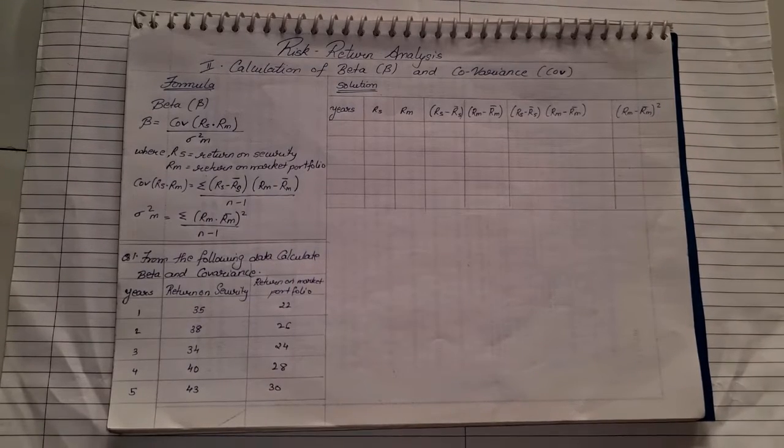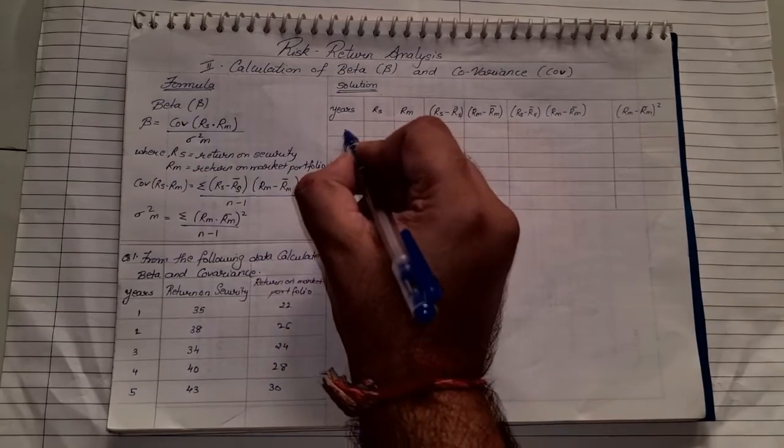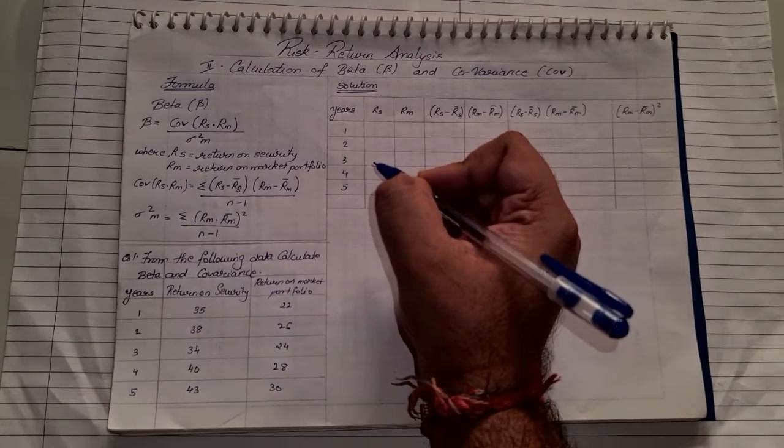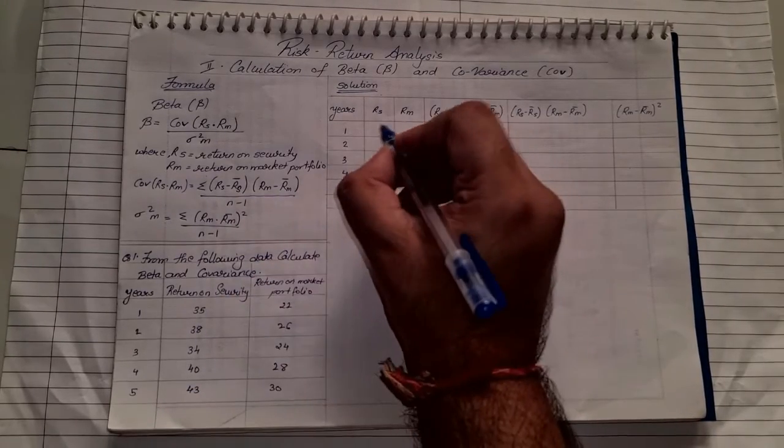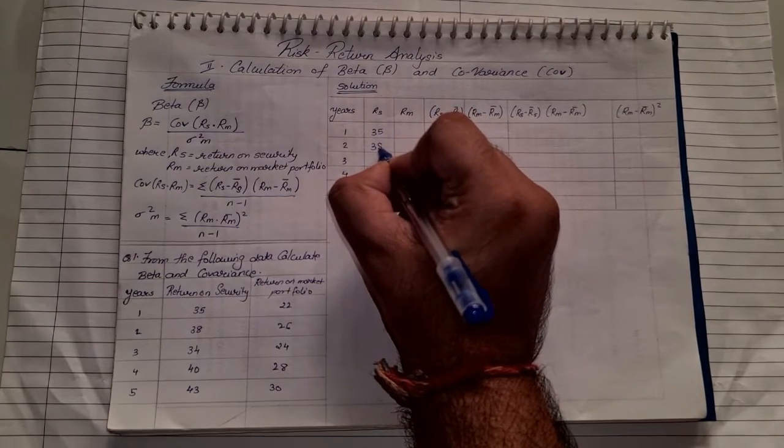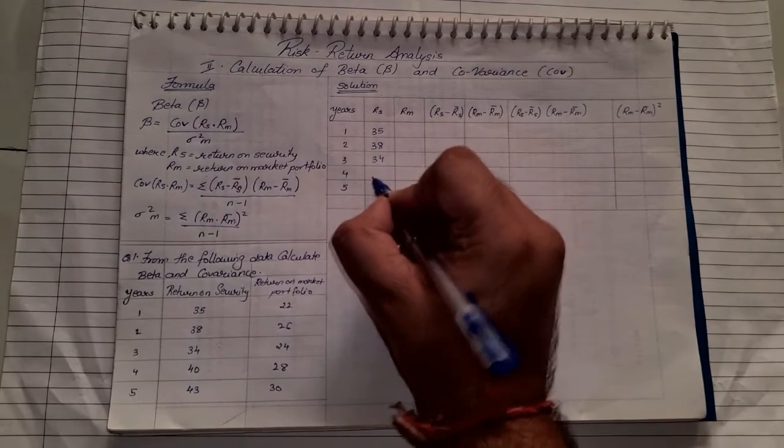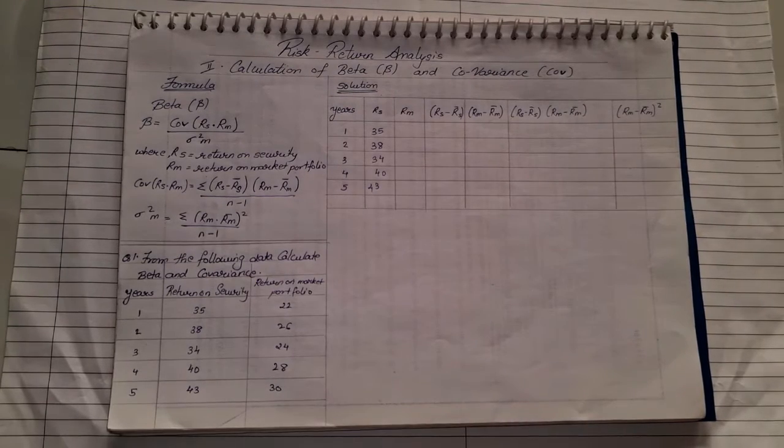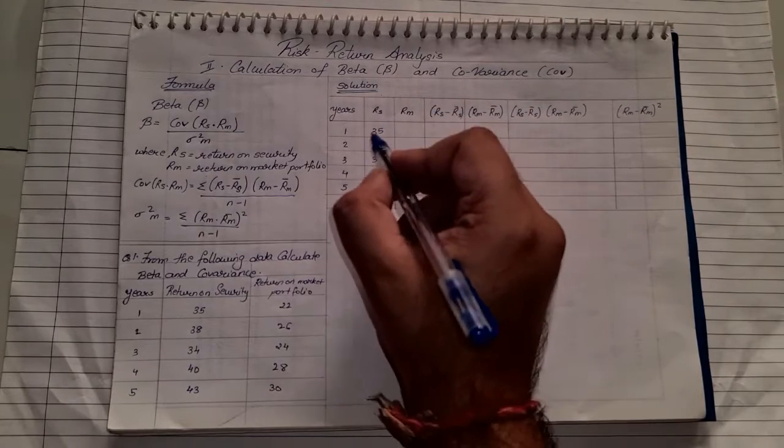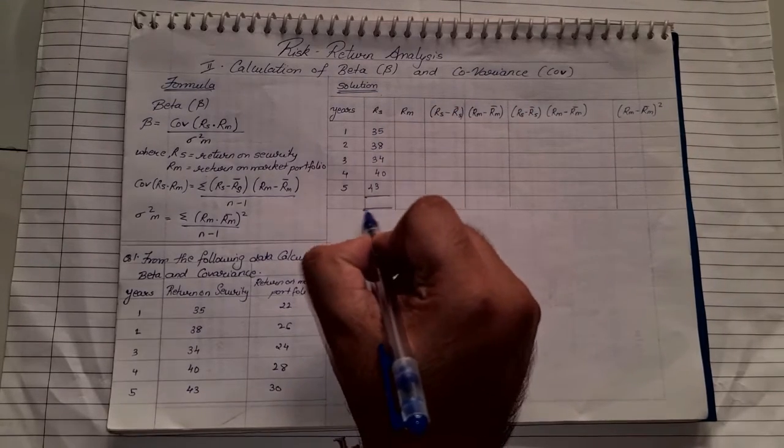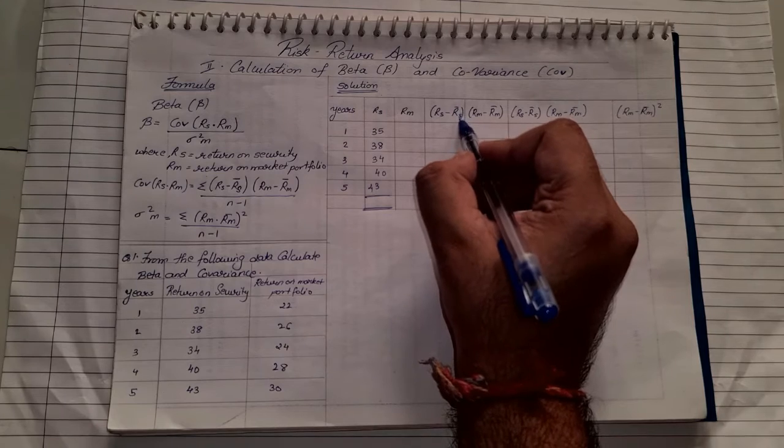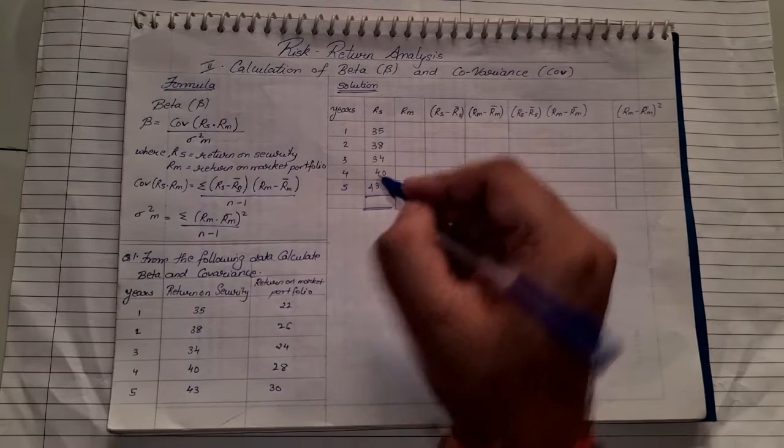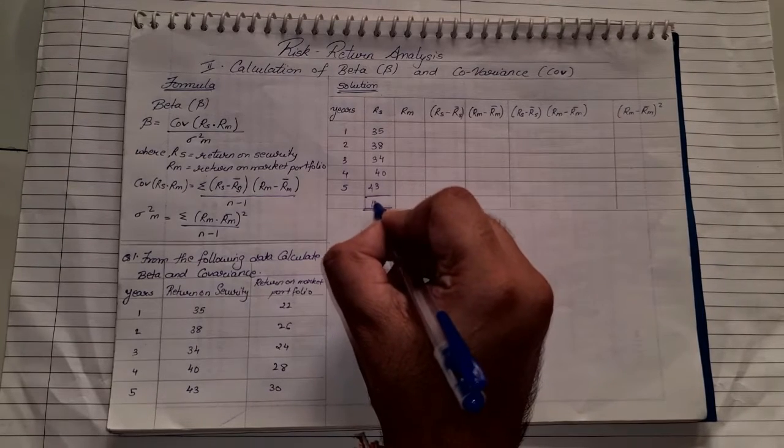Now let us see how we fill up the values. For years, we have 5 years: 1, 2, 3, 4, and 5. Under return on security, we will write 35, 38, 34, 40, and 43. Once you have the values of return on security, you will add it up because I need R̄, which is nothing but the average. So 35 + 38 + 34 + 40 + 43, the total will come to 190.